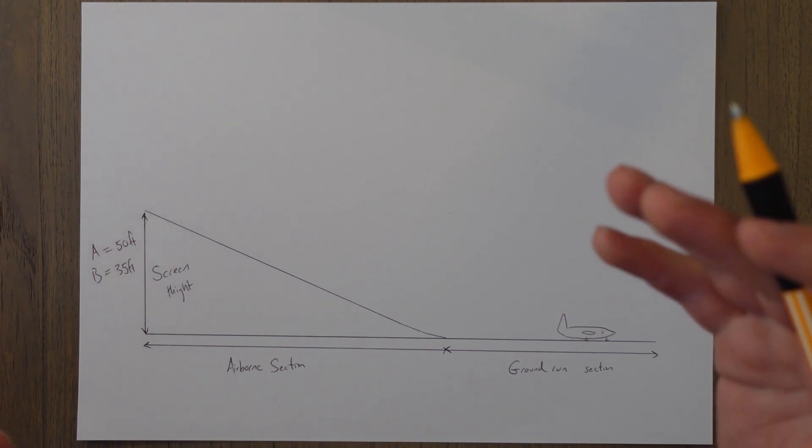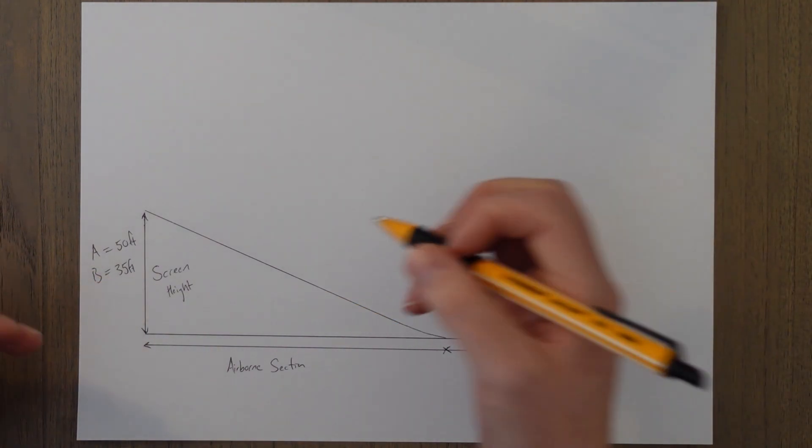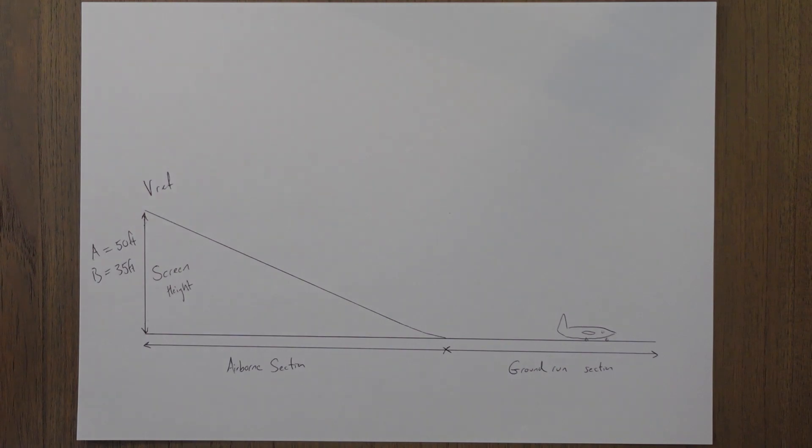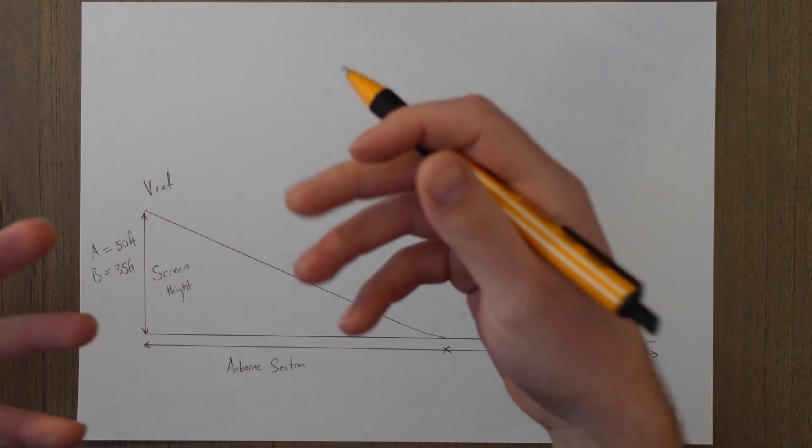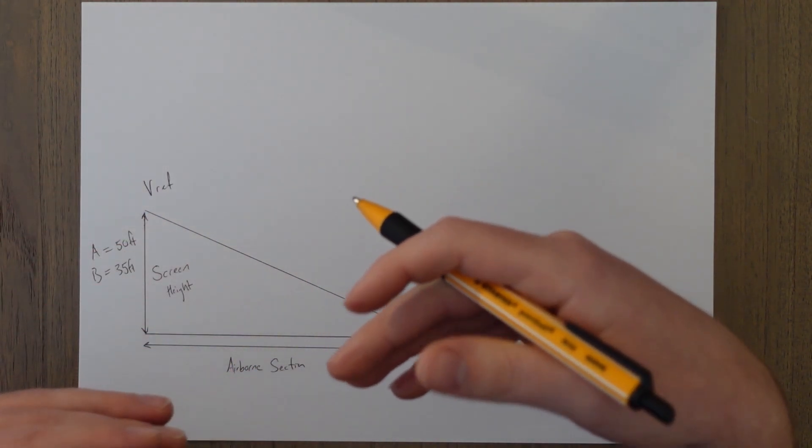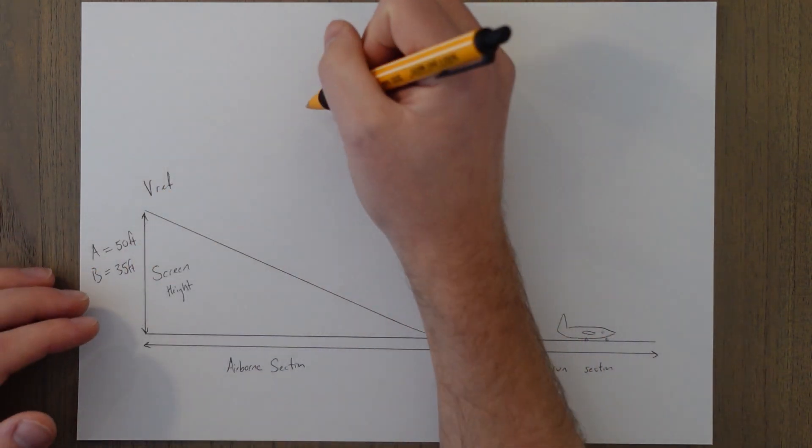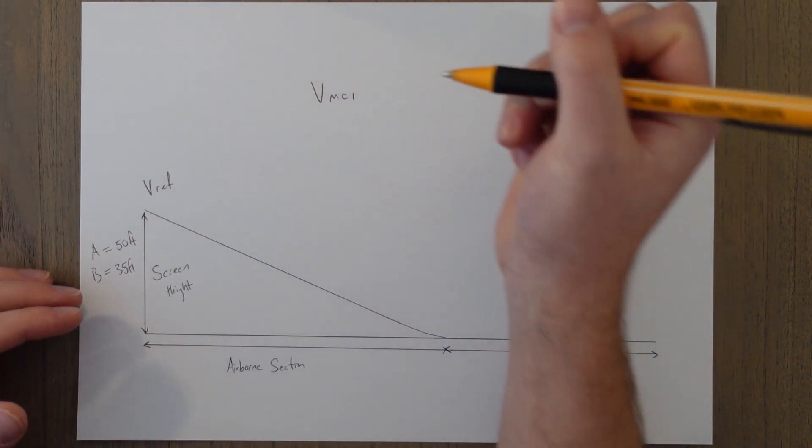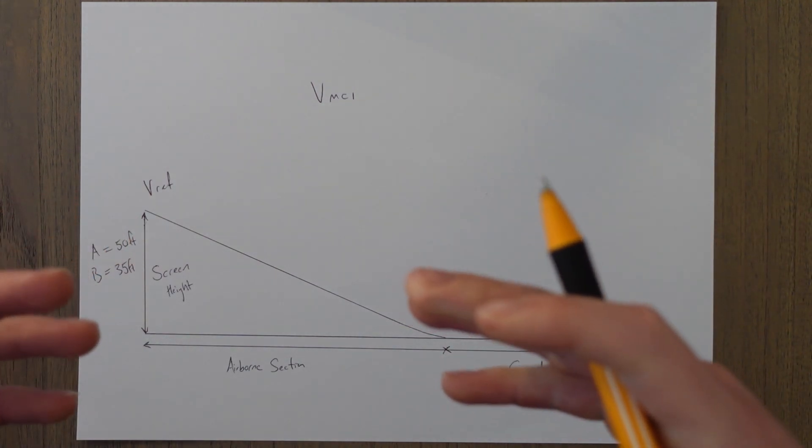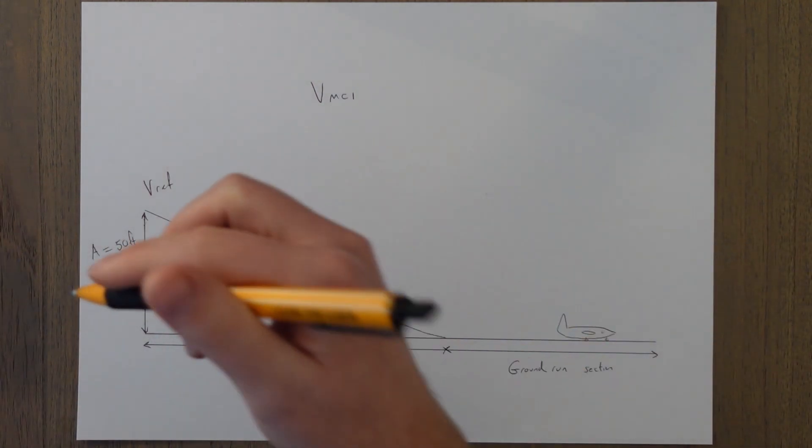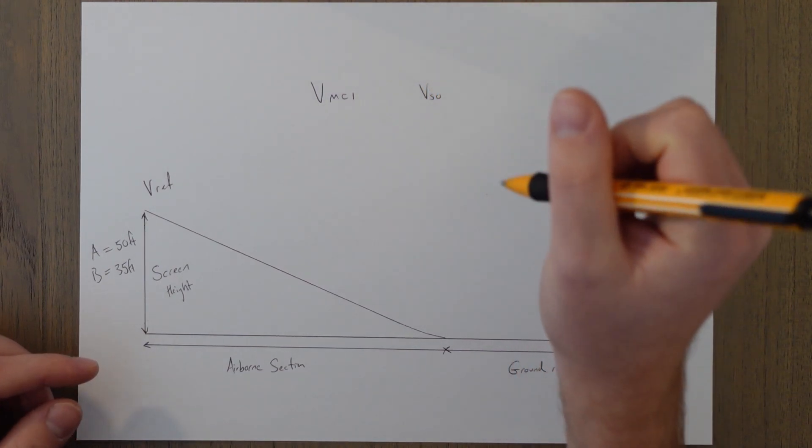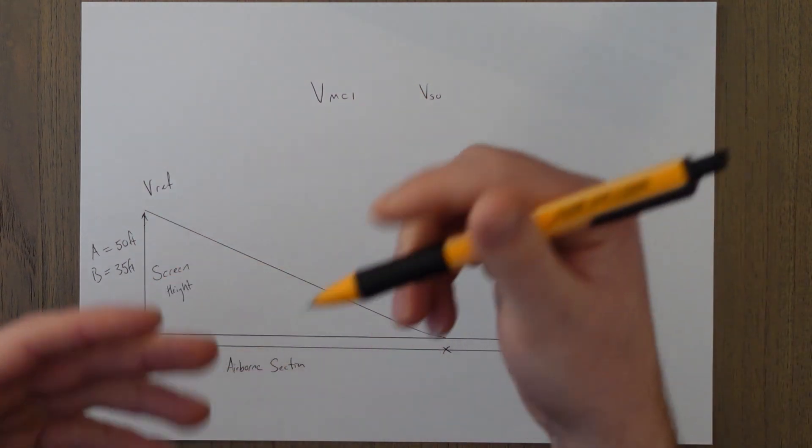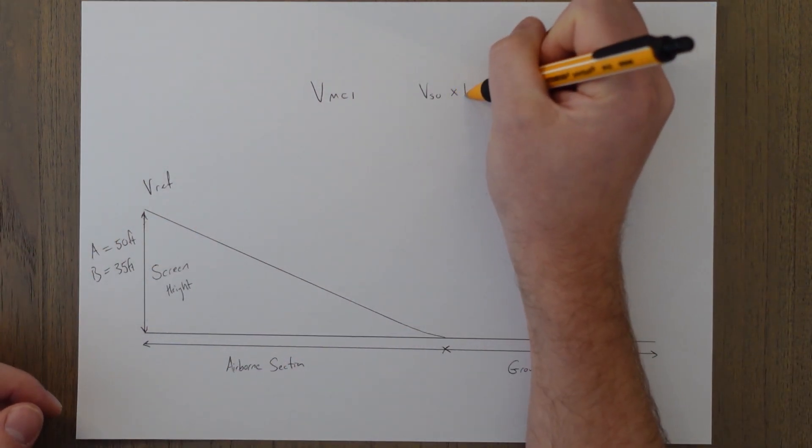The speed that we aim for in landing is a speed called V ref, basically the reference speed for landing. This is the speed that we cross the threshold at and the screen height at. V ref is calculated by comparing the minimum control speed for landing which is VMCL and the stall speed in the landing configuration which is VS0 and we apply a safety factor to the stall speed so we don't actually reach the stall which is 1.3.